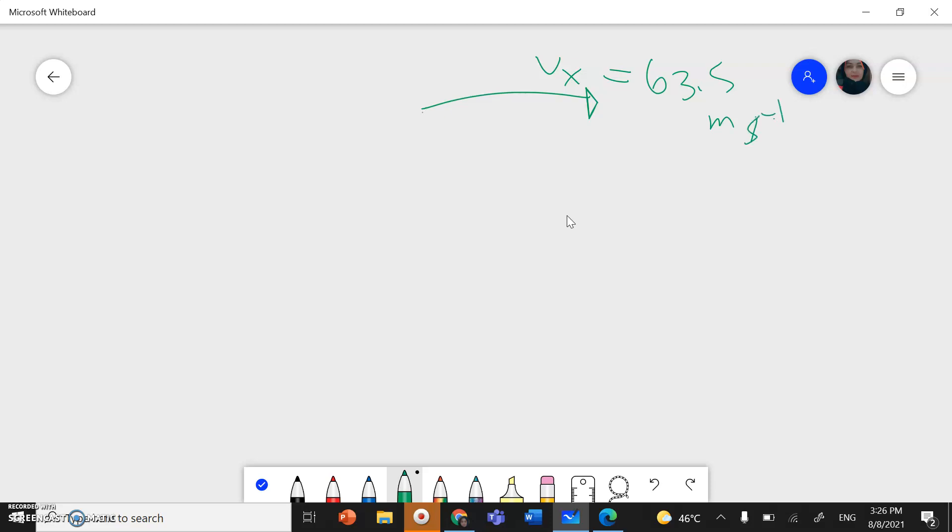And I have speed in the y direction. The final speed in y direction was 10.8 meter per second. These two speeds are perpendicular. So I need to find the resultant speed. Since they are perpendicular,